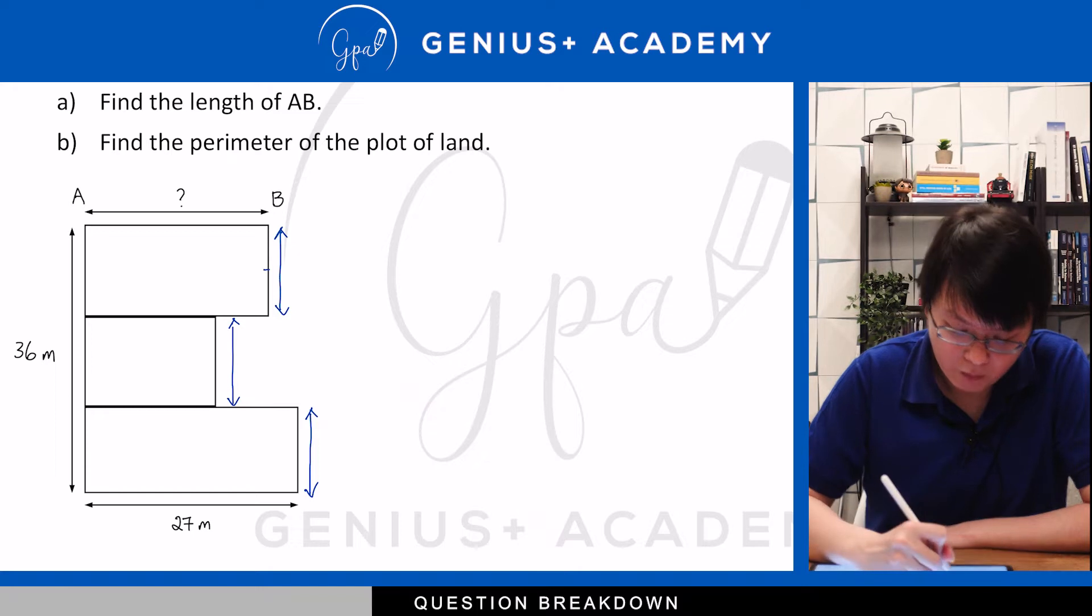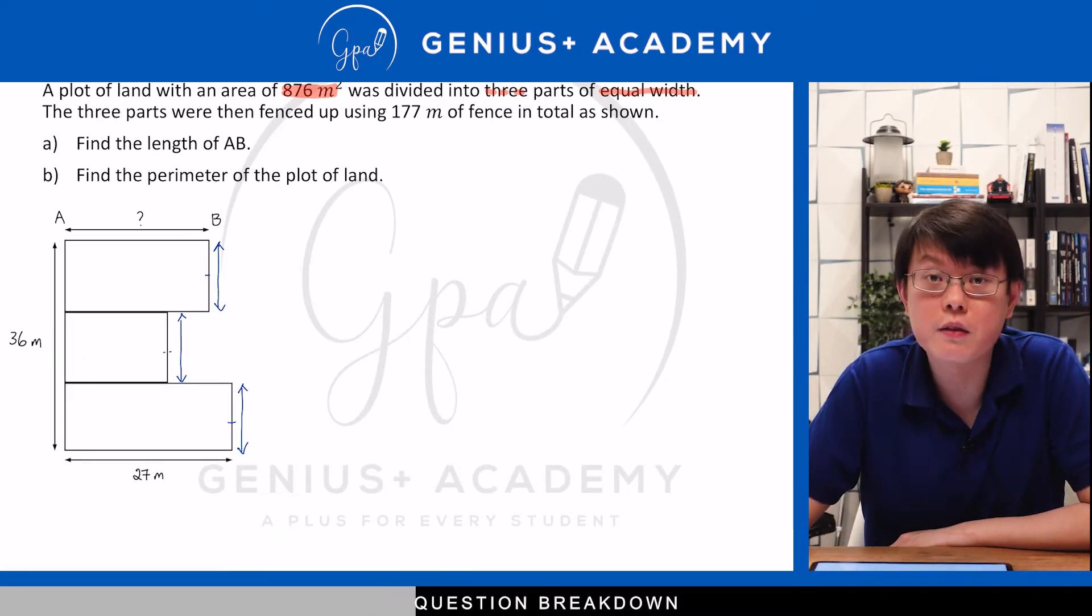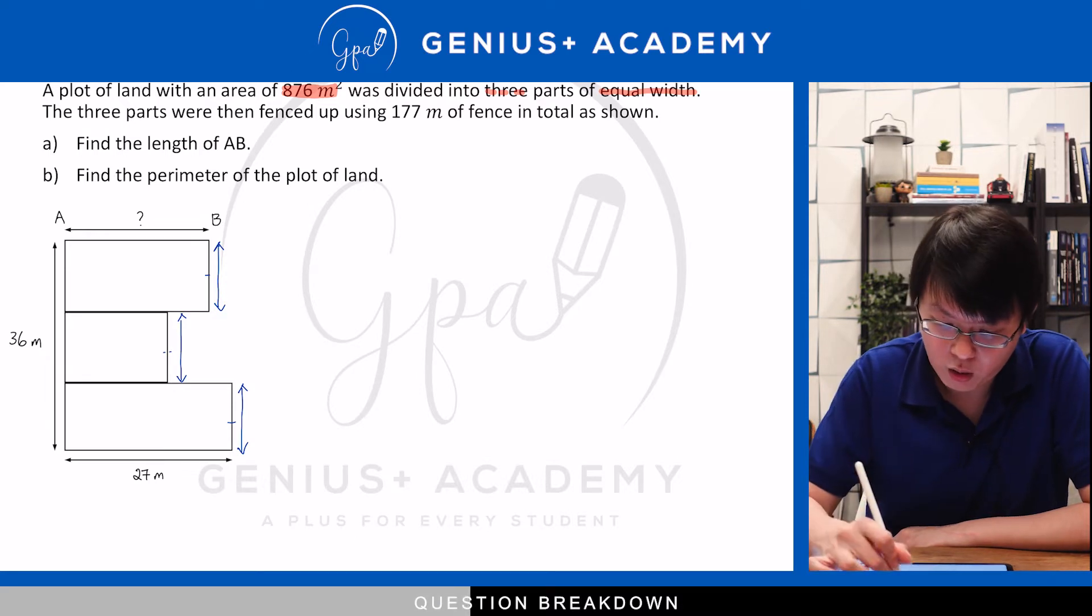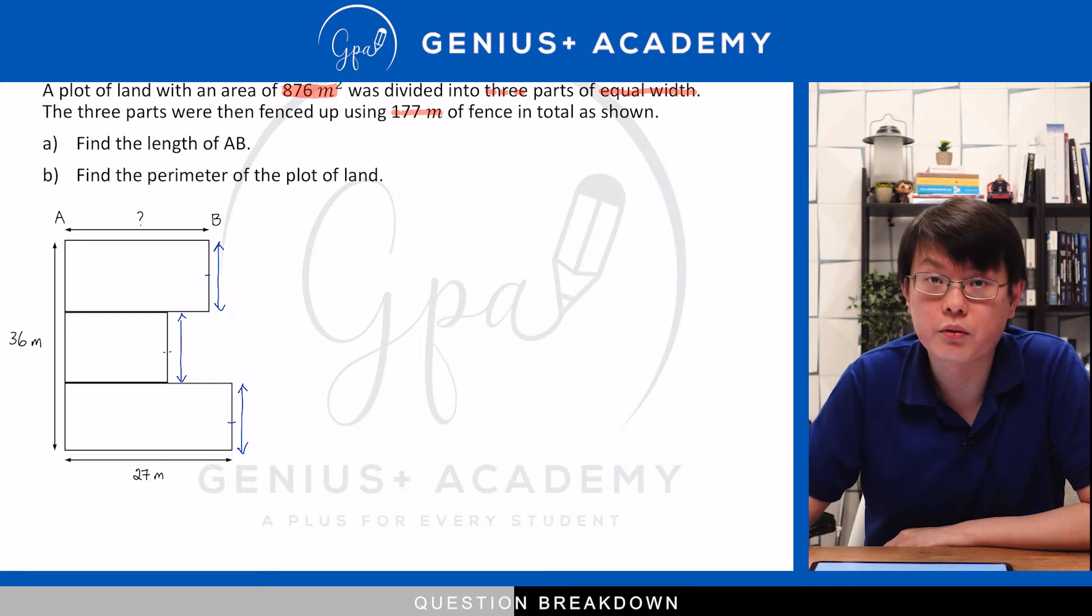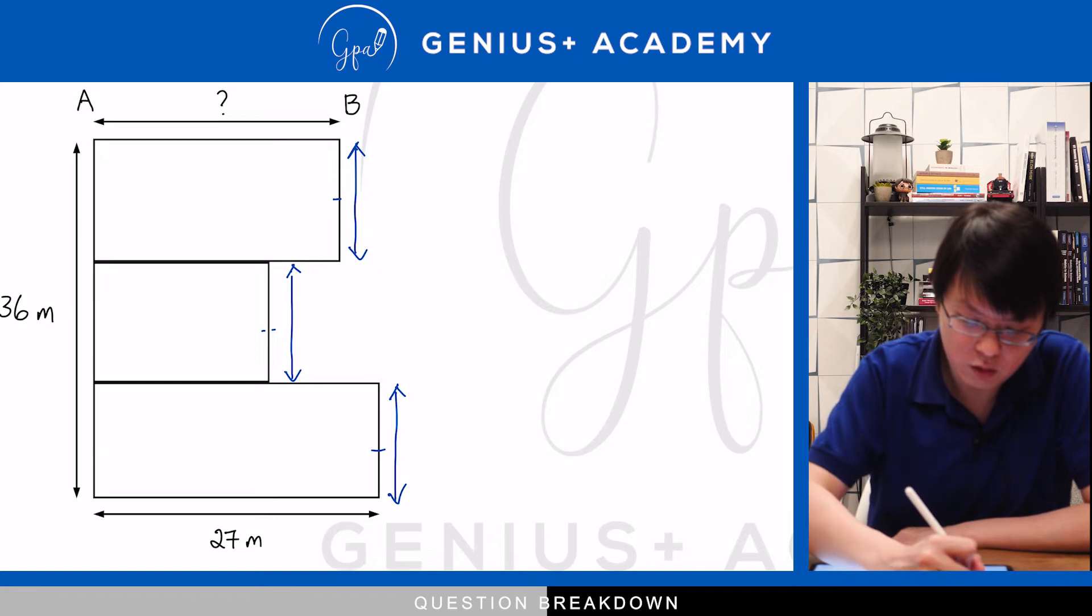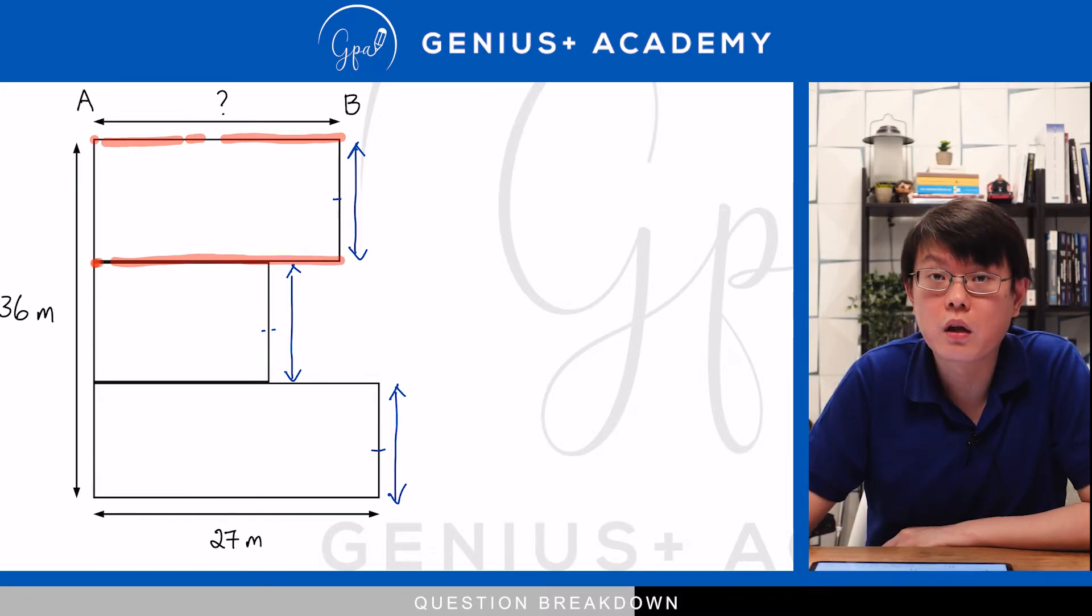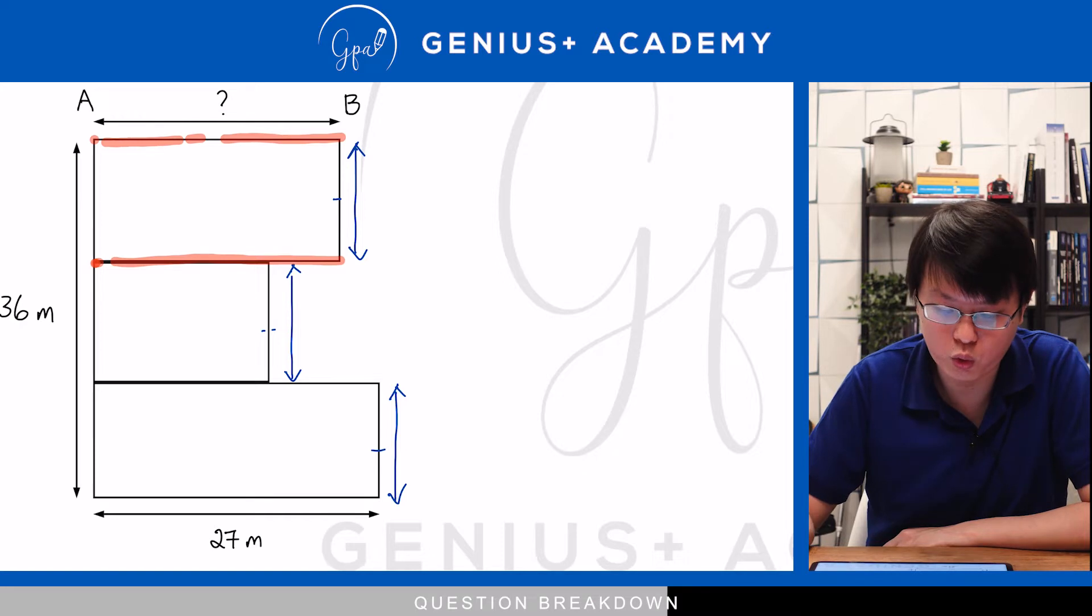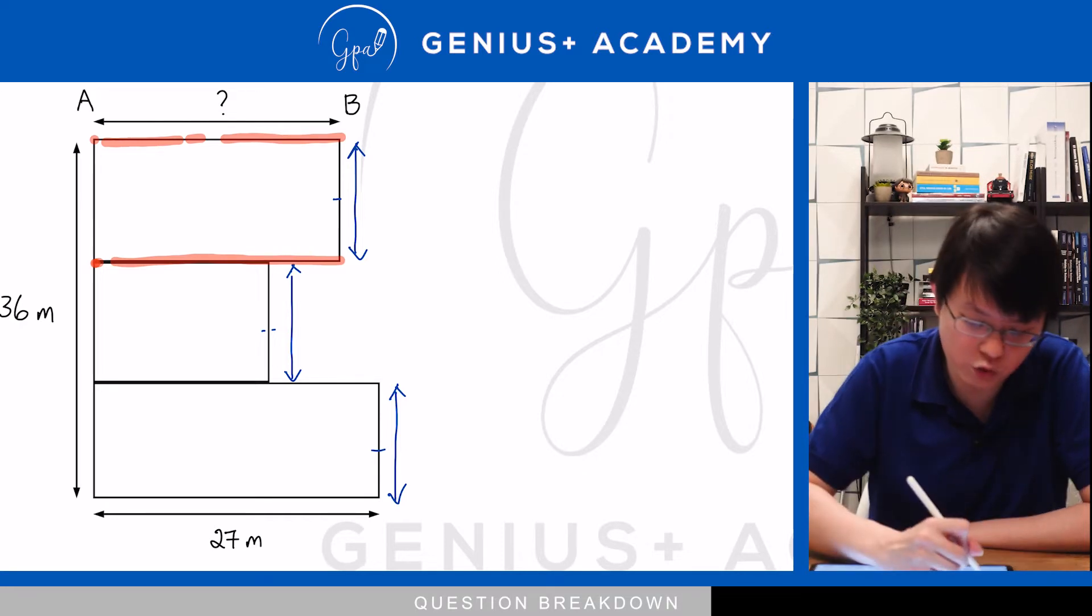The question then tells us that the three parts were fenced up using 177 metres of fencing in total. Now, let's take a highlighter and outline what exactly makes up the fencing. We should realise that when we highlight the fencing, there are parts that border each piece of land. Those parts that border each other will only be separated by a singular fence. You do not build a double fence. So that is the trick to the question.